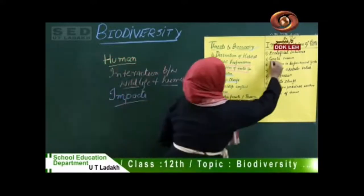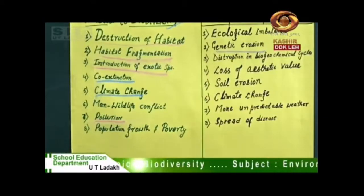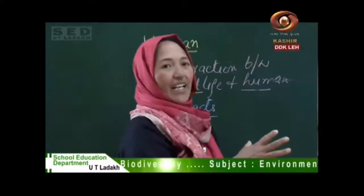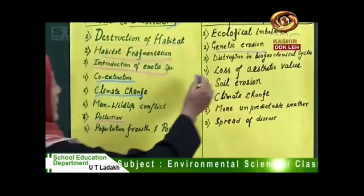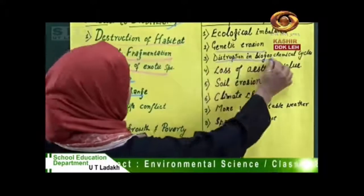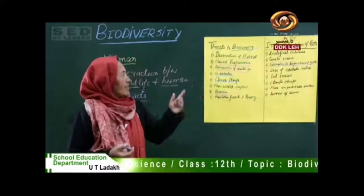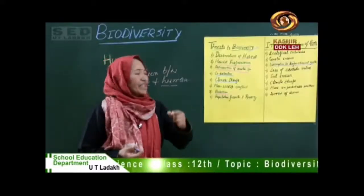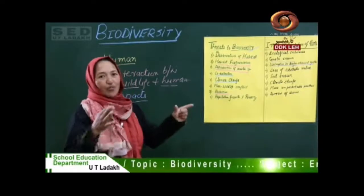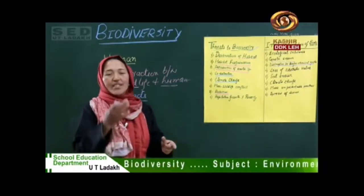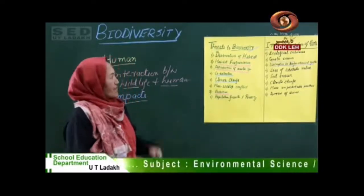The second impact is genetic erosion. Loss of species at the genetic level means they will be extinct forever. The third impact is distortion in biological cycles. Biodiversity helps maintain the biogeochemical cycle. When there's a disturbance in biodiversity, the whole biogeochemical cycle is disturbed, which is necessary for all life to exist.